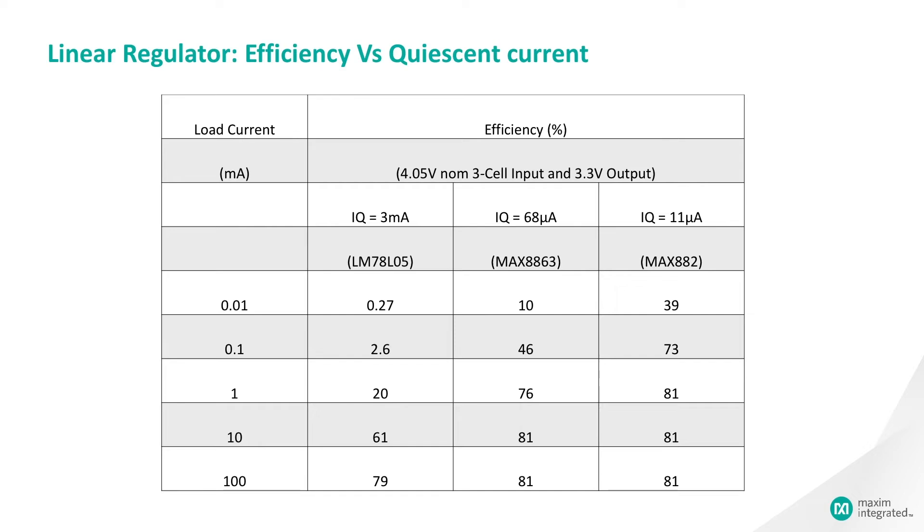This table shows how quiescent currents affect efficiency for three devices, a common low-power regulator often used in AC line-powered designs, the LM78L05, and two regulators optimized for low operating current, the MAX8863 and MAX882.